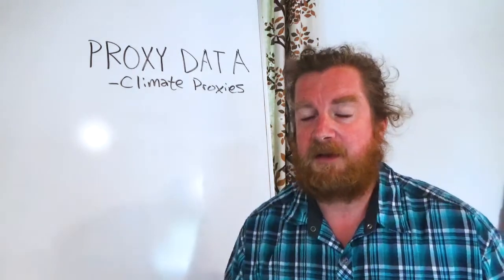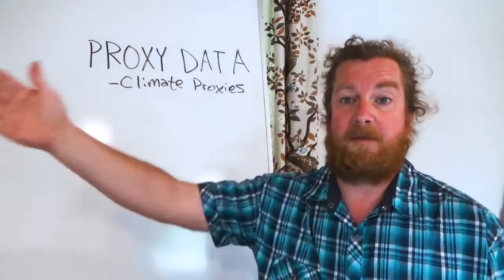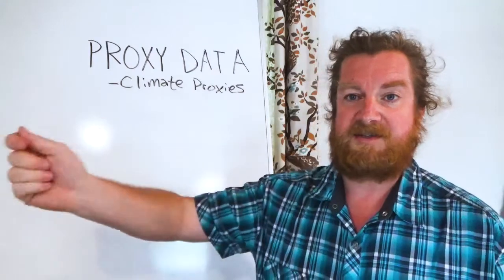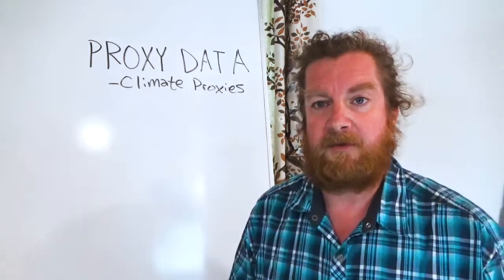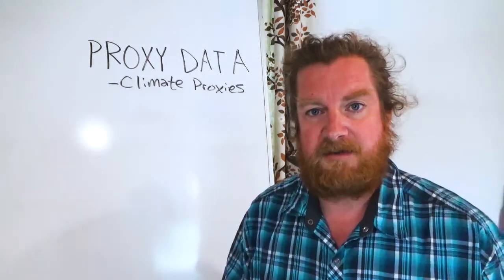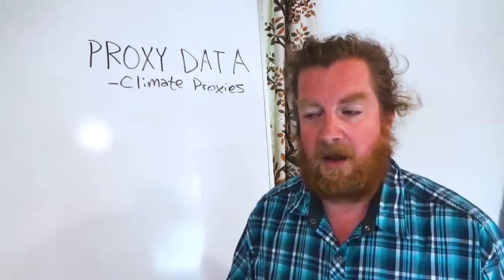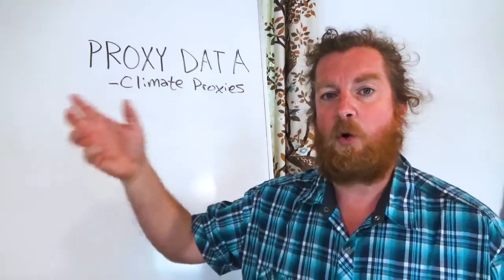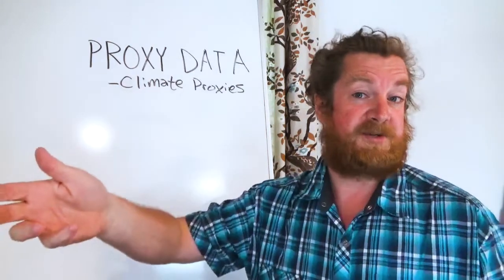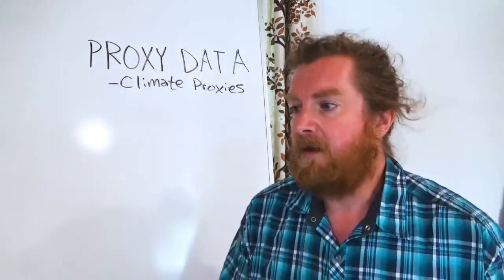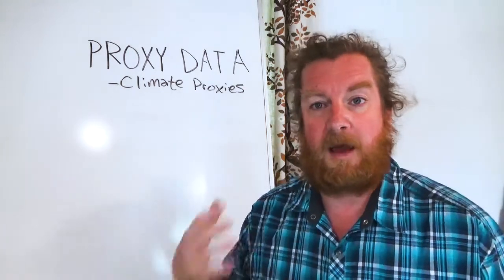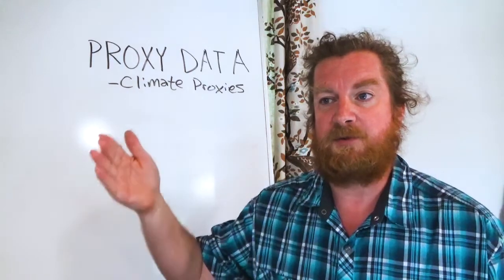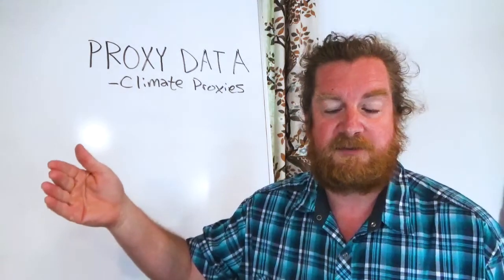In the case of climate, especially when we think about climate in Earth's past, we can't go and measure it. We can't go and stick a thermometer up in the air 700 years ago — that chance is gone. So what we need to do is find something that we can measure that correlates to temperature. That is what we would call a proxy: something you can measure that correlates to the thing you're actually really interested in.